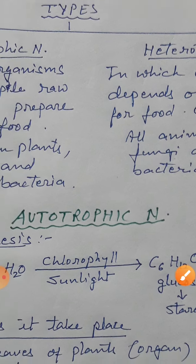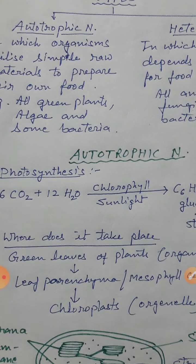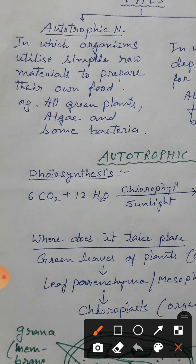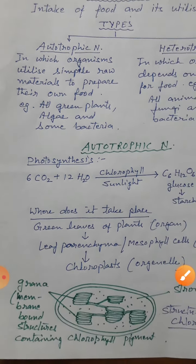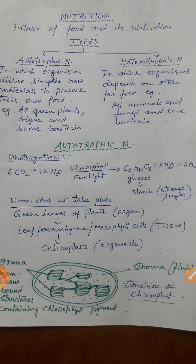Now let's see autotrophic nutrition. Autotrophic nutrition is the nutrition by plants. Aur plants mein jo autotrophic nutrition hota hai, woh hai photosynthesis. In lower classes also you have studied — photo means light, synthesis means to prepare. So what is photosynthesis? Preparation of food by green plants utilizing carbon dioxide and water in presence of sunlight. To autotrophic nutrition ko agar hum reaction ke tor par dikhaen, to it is like this.